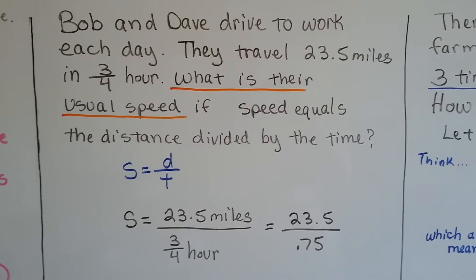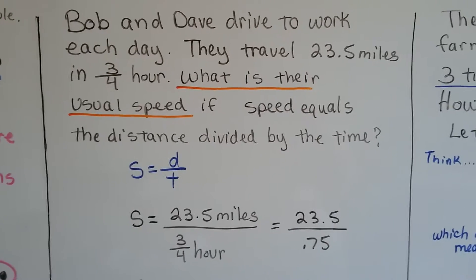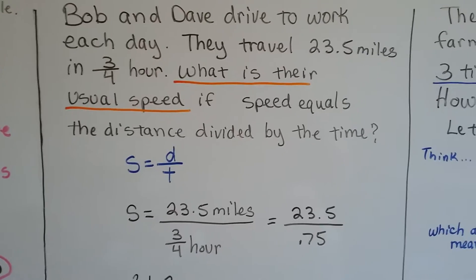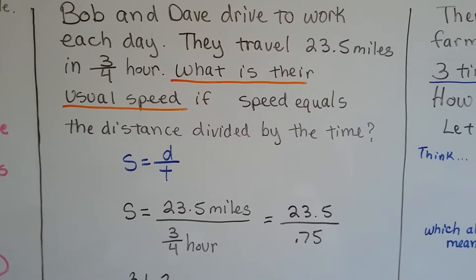So I underline what is their usual speed because that's what we need to find. So we plug in the numbers that we have in the word problem, the 23.5 miles for how far they traveled, that's the distance, and the 3 fourths hour for the time.